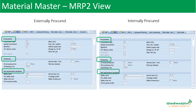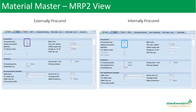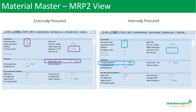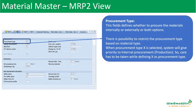The key difference is the procurement type. The procurement type is F and E. The store location is for external procurement — it will have internal procurement. The delivery time is for external procurement, and the internal procurement is the in-house production. Procurement is internal procurement and external procurement.